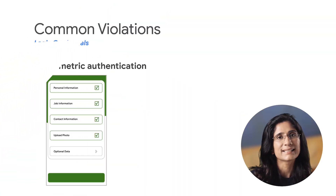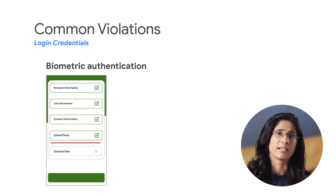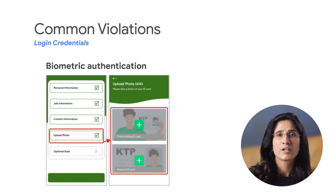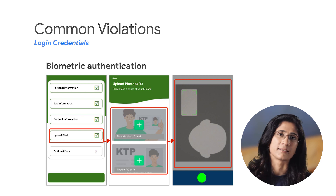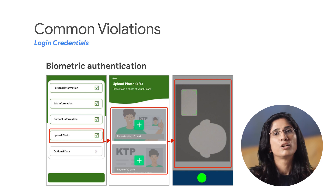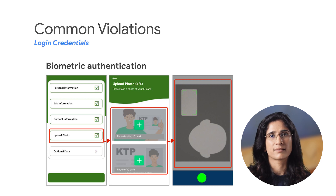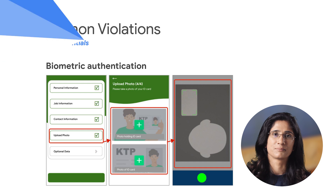Our next example is about biometric authentication, such as requiring face scans, fingerprints, or photos to access in-app content. To resolve this, you will need to provide other ways to access in-app content, as Google Play reviewers cannot provide their own biometrics.